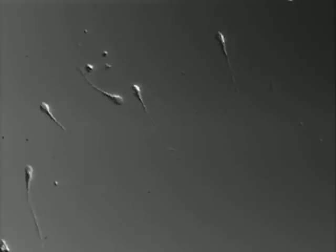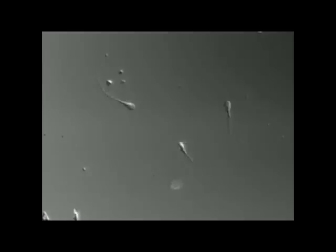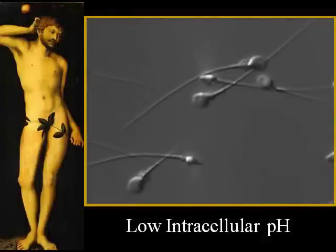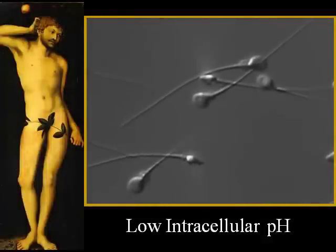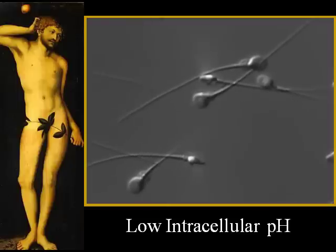Spermatozoa are highly specialized cells with the sole function of delivering paternal genetic material into the egg. Sperm motility is different depending on the location in the male or female reproductive tracts. The key regulator of both sperm motility and fertilizing ability is sperm intracellular pH. Fluids of the male reproductive tract make sperm intracellular pH highly acidic.